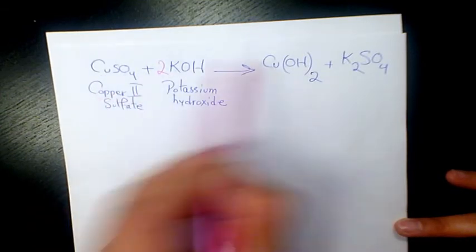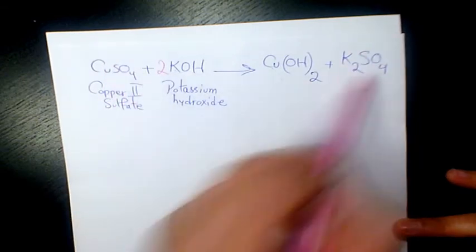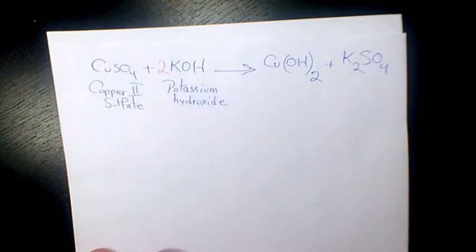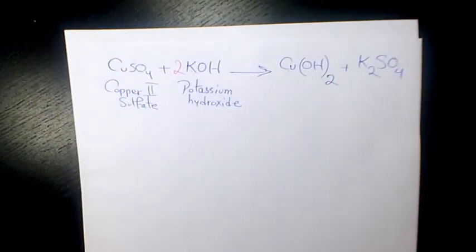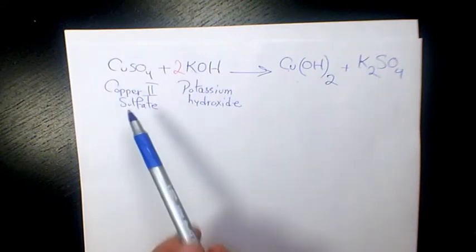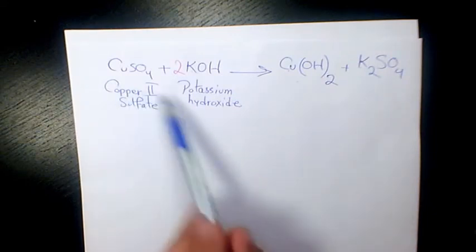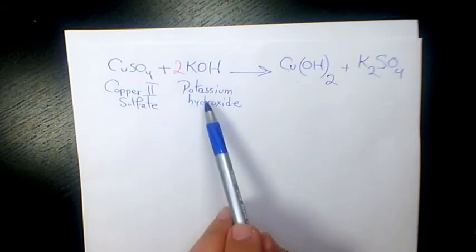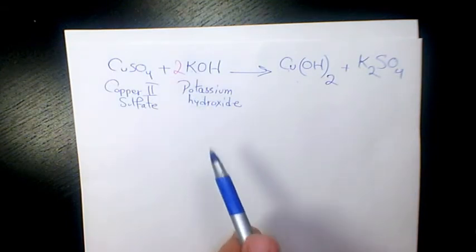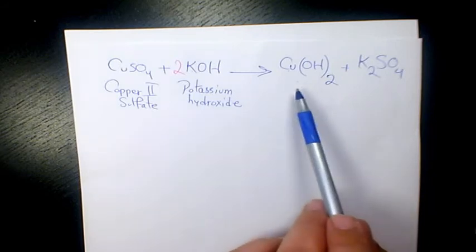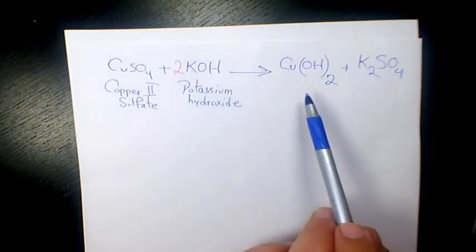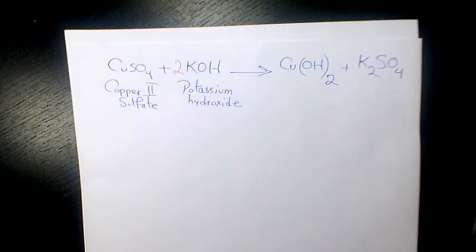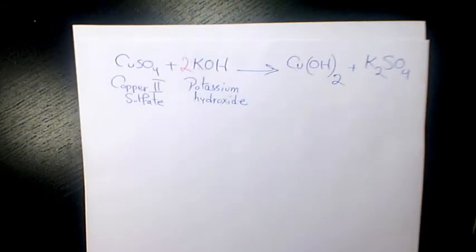SO4 is one, SO4 is one as well, so that's balanced. Per one mole of copper sulfate, we need two moles of potassium hydroxide in order to have a stoichiometric relationship, and when we have that we're gonna produce one mole of copper hydroxide and one mole of potassium sulfate.